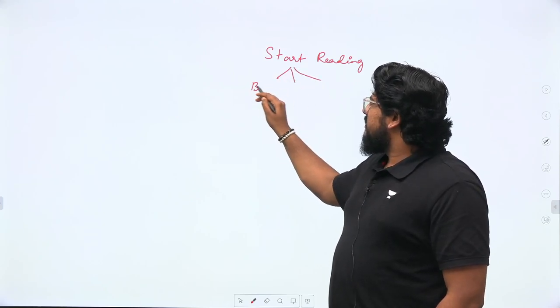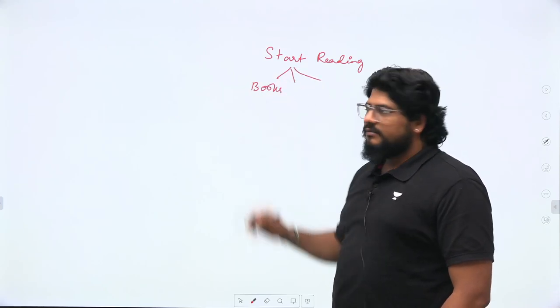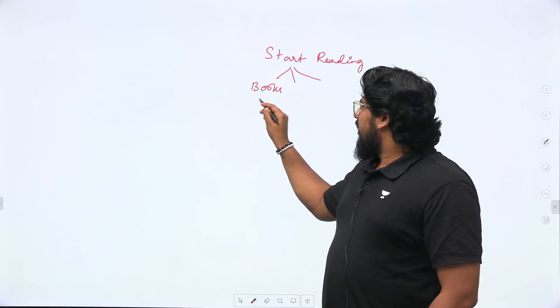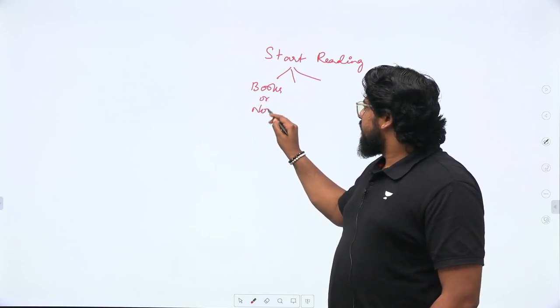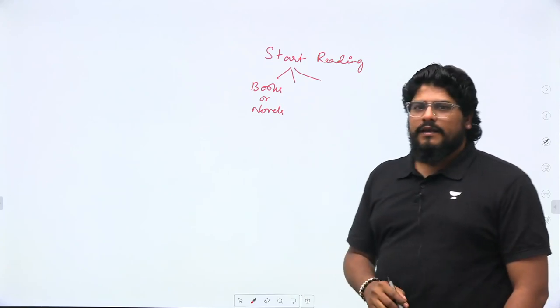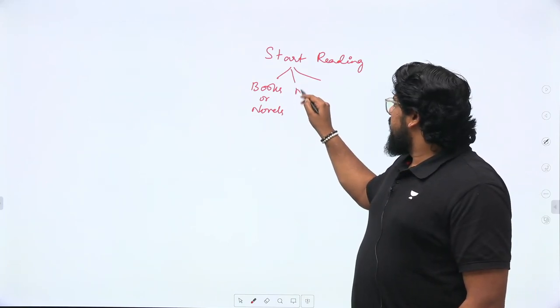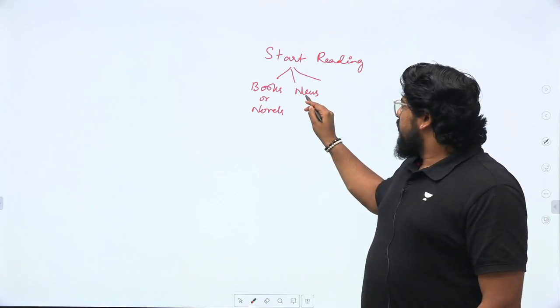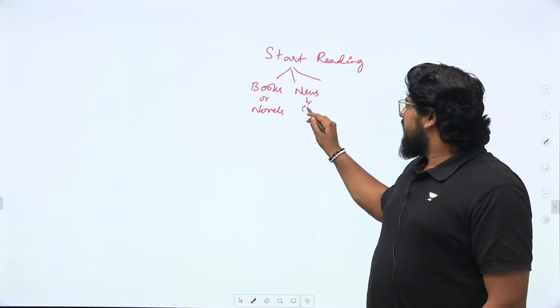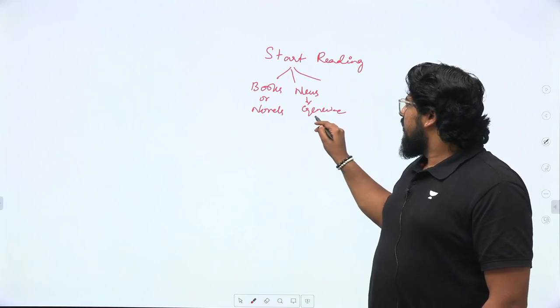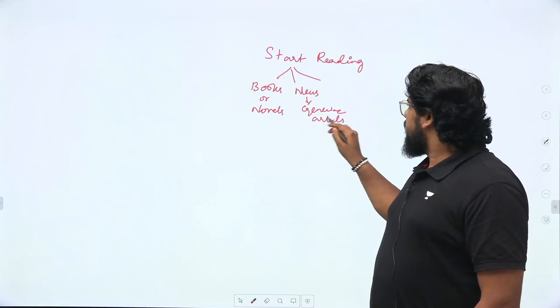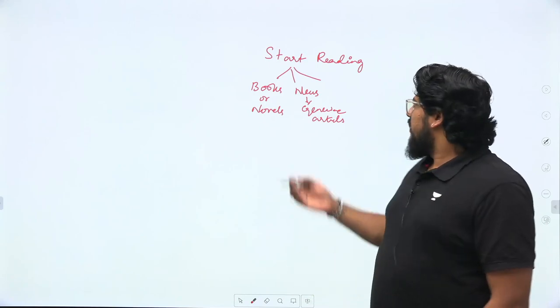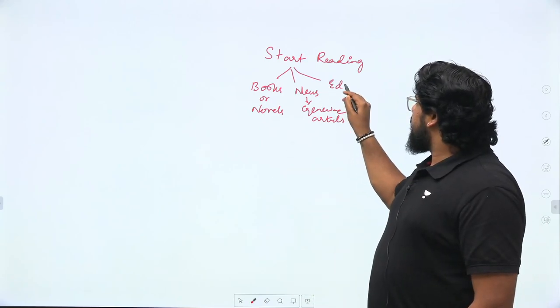The first source is books, or I would say novels. The second source is newspapers—generic news articles or editorials.